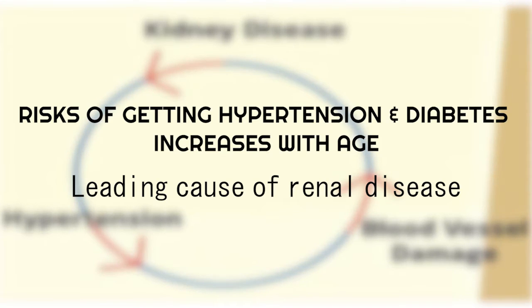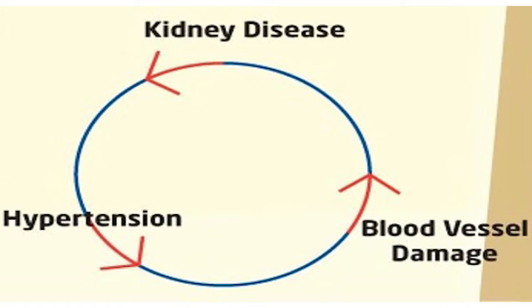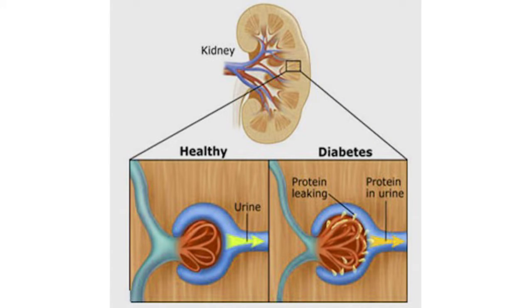The risks of hypertension and diabetes increase with age. These two conditions are particularly hazardous to the kidneys and are the leading causes of renal disease. High blood pressure makes the heart work harder and over time can damage blood vessels in the kidneys, causing them to stop removing waste and extra fluid. This extra fluid may then raise blood pressure even more. For diabetes, high levels of glucose make the kidneys work harder to filter the blood, which over time can damage them. The filtering units may become porous and proteins such as albumin will leak into the urine — a condition known as microalbuminuria.